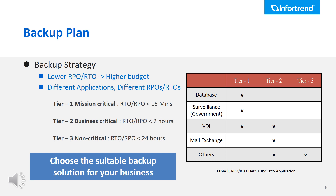Take a look at the table. The left column contains the applications while the right column contains the tiers the application supports. Usually, enterprise customer database systems like financial institutions need a Tier 1 RTO and RPO backup solution, meaning the required RTO and RPO are shorter than 15 minutes or even shorter than 1 minute. Government surveillance applications also need a Tier 1 solution. The rest of the applications are based on the customer's requirements, and they may consider using Tier 2 or Tier 3 solutions due to budget constraints.